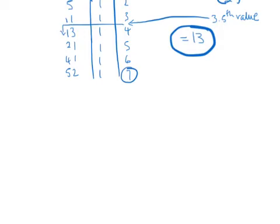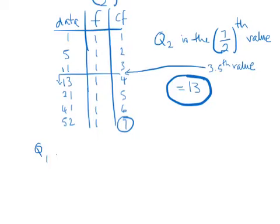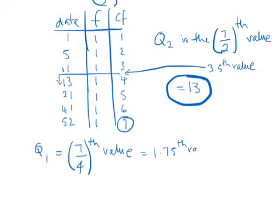Q1 is the total cumulative frequency — which is 7, the number of numbers — divided by 4. So it's the 7 over 4th value. 7 over 4 is 1.75, so we go down the cumulative frequency until we get to where 1.75 would be, and then we choose the next highest number, which is 5. So Q1 is 5.